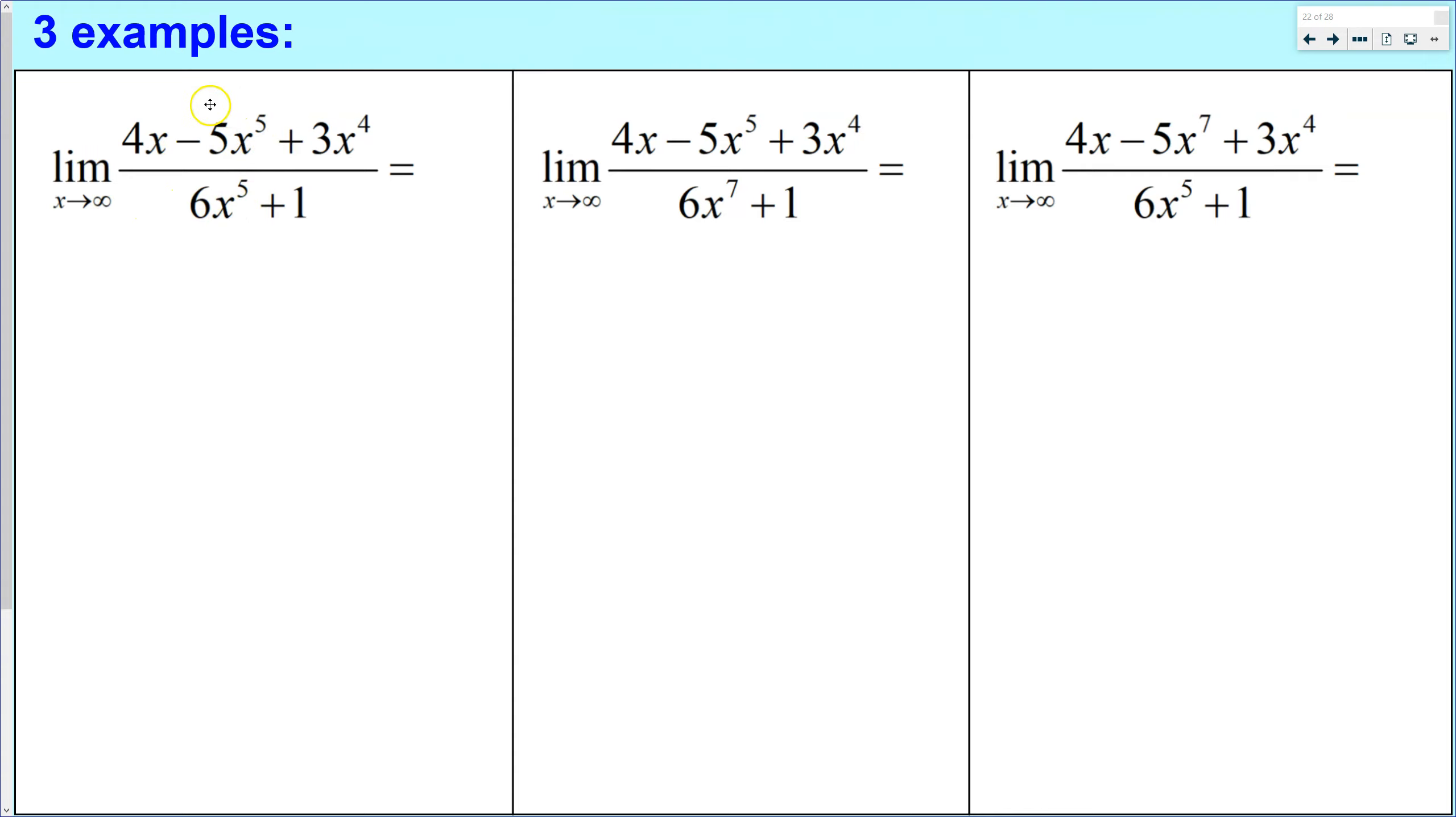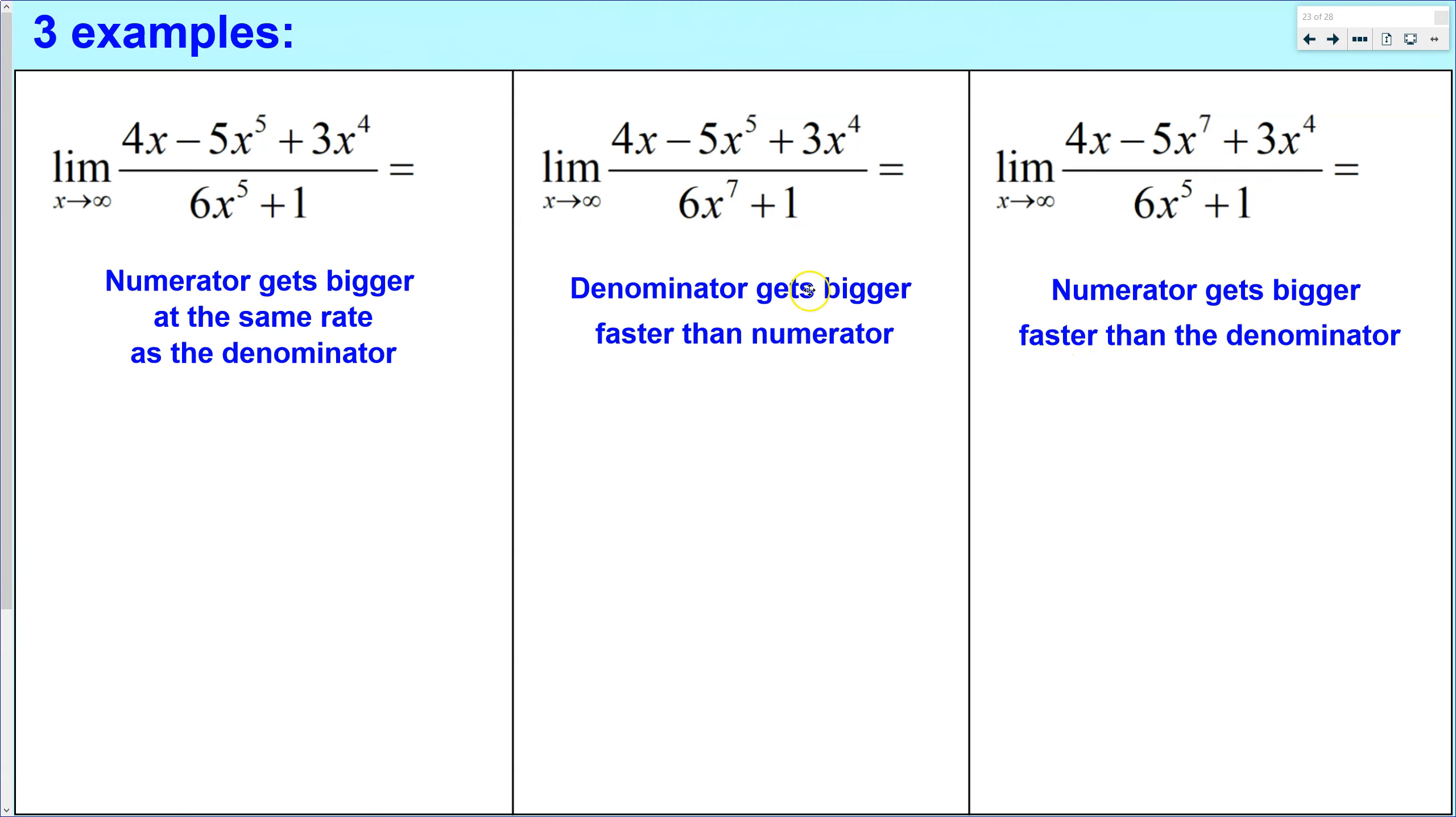This one, we have the larger power down on the denominator, and this one, we have the one larger on the numerator. So we can make those three observations. And since this one was a tie, let's divide the coefficients. So we get negative 5 sixths. If this one, the bottom wins, that means that we're always going to 0. If the bottom wins, we're going to 0. It's that simple. And if the top wins, we're going either to positive infinity or negative infinity.